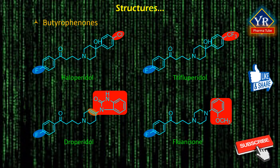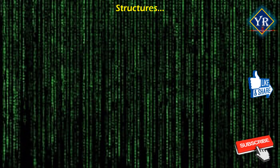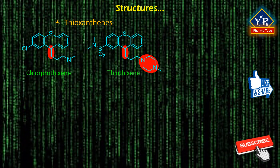Haloperidol is the most widely used classical antipsychotic drug in this class. Droperidol is used as an antiemetic for post-operative nausea and vomiting. Thioxanthene is a chemical compound in which the oxygen atom in xanthene is replaced with a sulfur atom. The thioxanthenes are closely related chemically to phenothiazines. The major structural difference is that the nitrogen at position 10 in phenothiazines is replaced by a carbon atom with a double bond to the side chain. This difference is noted in the structures of chlorprothixene and thiothixene, which show a double-bonded carbon at position 10, opposite the sulfur atom in the central ring.